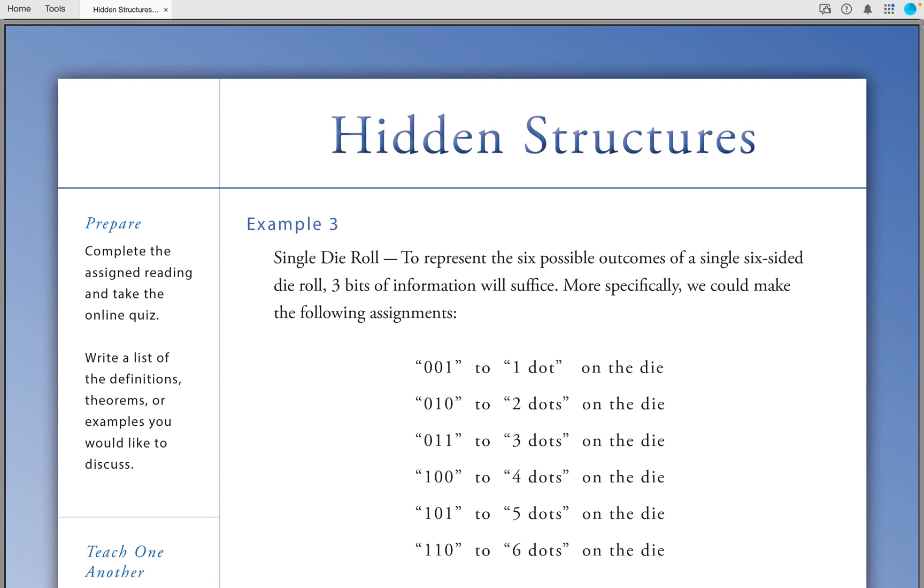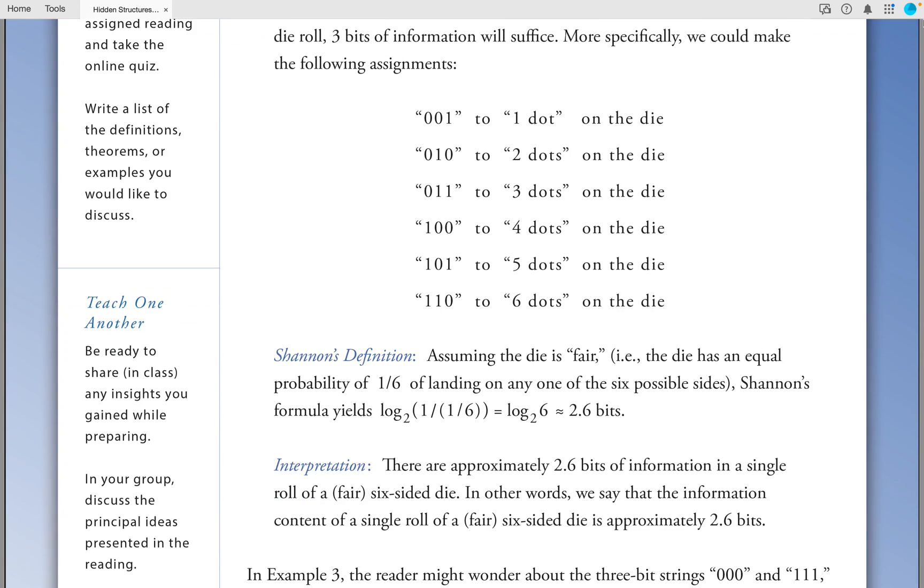Example 3: Single die roll. To represent the six possible outcomes of a single six-sided die roll, three bits of information will suffice. More specifically, we could make the following assignments: 001 is assigned to one dot on the die, 010 is assigned to two dots on the die, 011 to three dots, 100 to four dots, 101 to five dots, 110 to six dots.